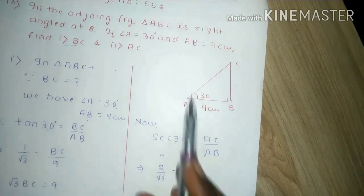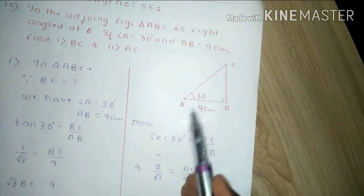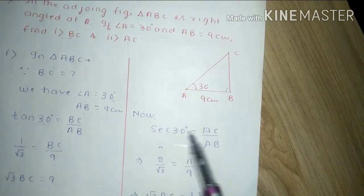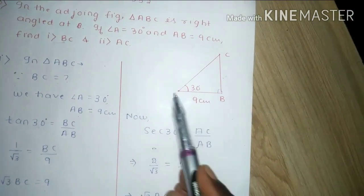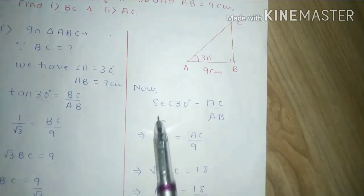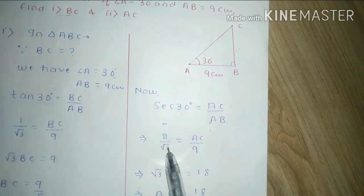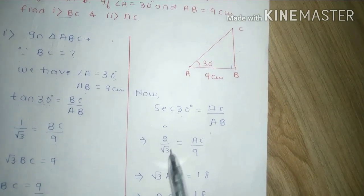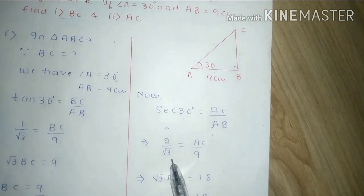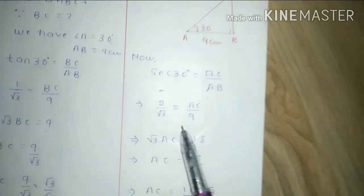So sec theta, sec 30 degrees I have taken. Sec, why sec, because we have base and hypotenuse between the relation given in question. So I will take 2 upon under root 3, you will have to see this value in the book.